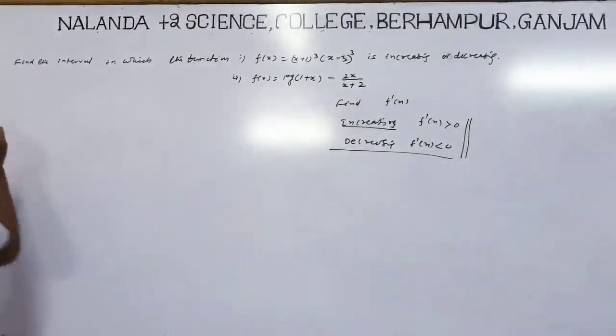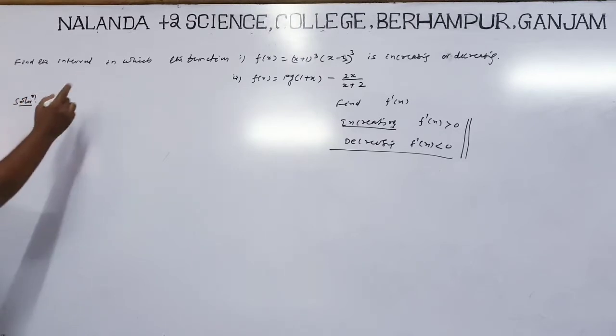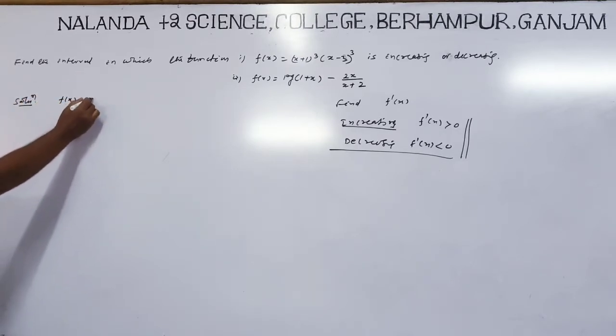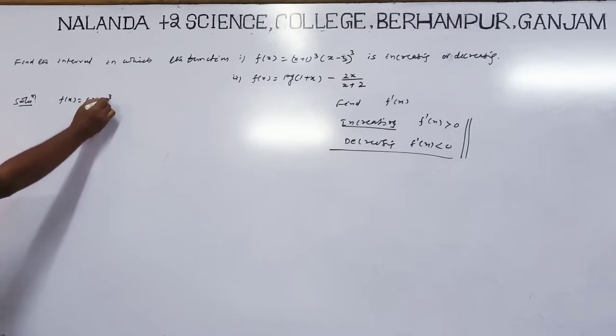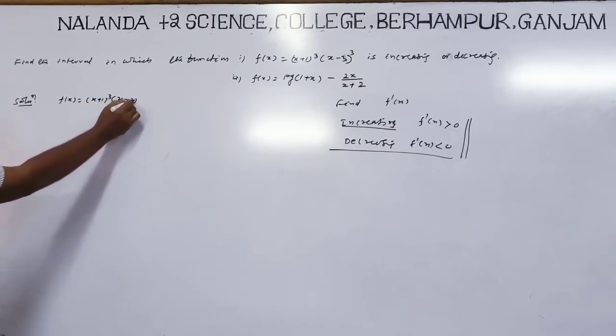Now here, f(x) is given as (x+1)³ multiplied by (x-3)³.